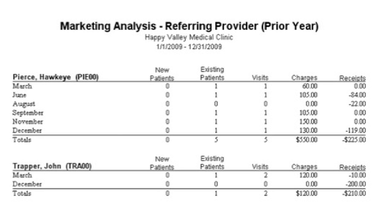You can look at this one of two ways. For example, John Trapper referred over 120 in charges and 210 in payments, versus 550 in charges and 220 in payments for Hawkeye Pierce. You can go through and identify a referring physician who's not sending you anything anymore and either decide you don't care about them, or if you see someone is no longer referring patients to you, you can reach out to them and ask why.